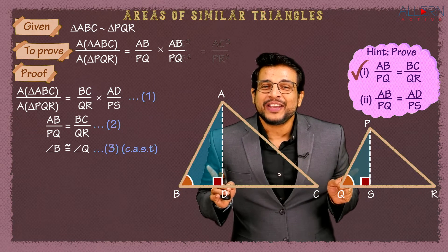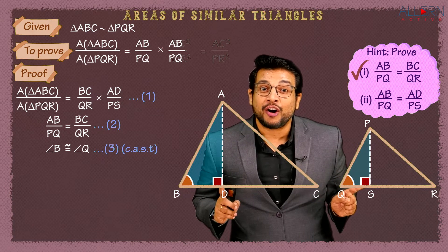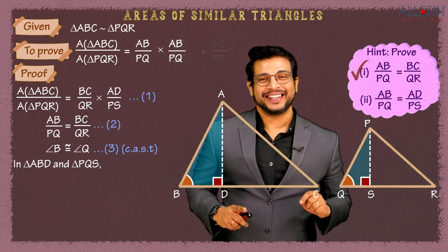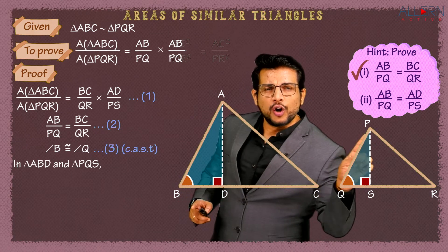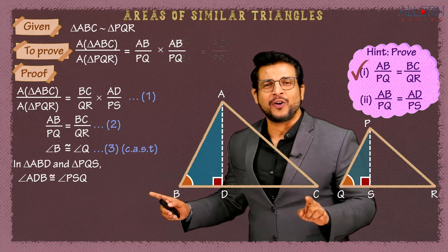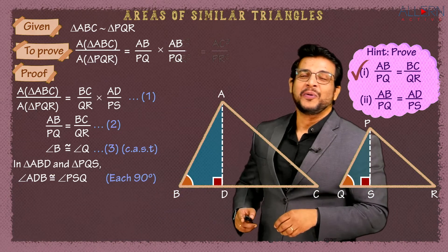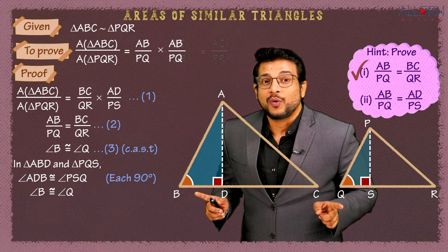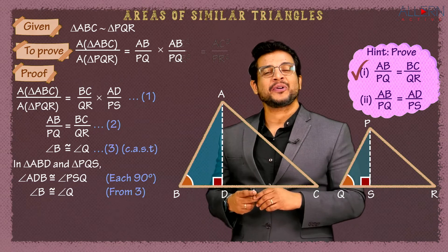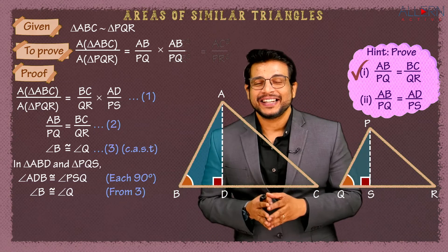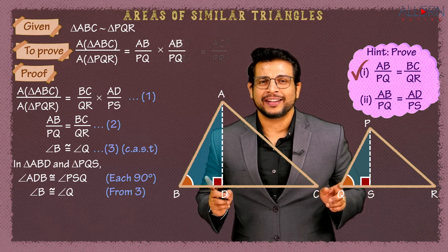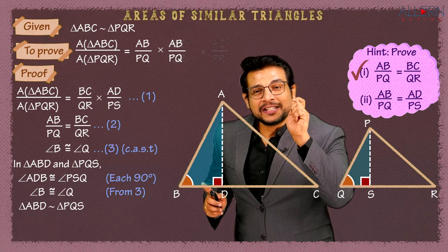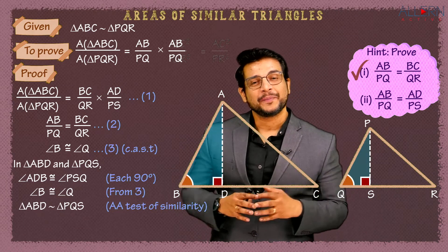In triangle ABD and triangle PQS: angle ADB is congruent to angle PSQ — both are 90°. And angle B is congruent to angle Q — from Result 3. So in both triangles we have two pairs of corresponding angles which are equal. Therefore triangle ABD is similar to triangle PQS by the AA test of similarity.